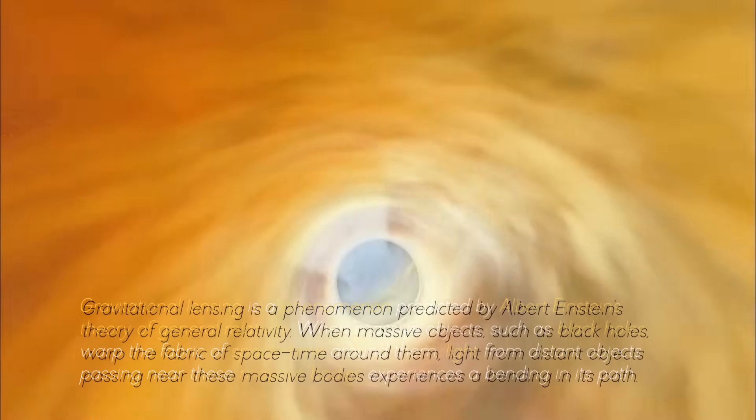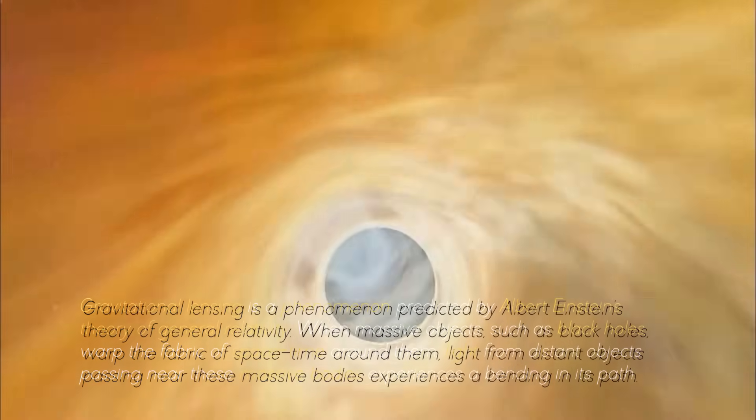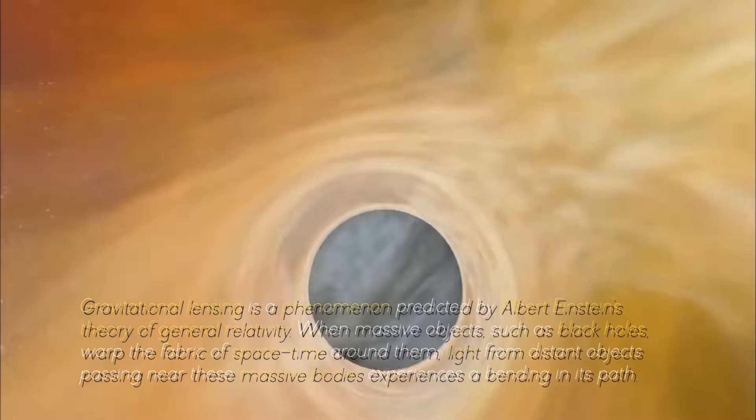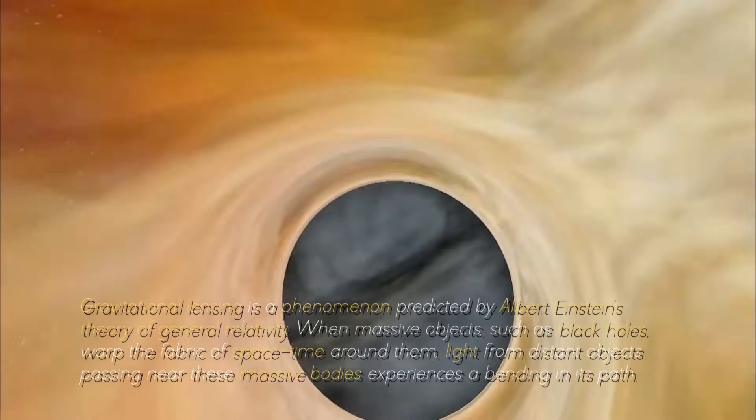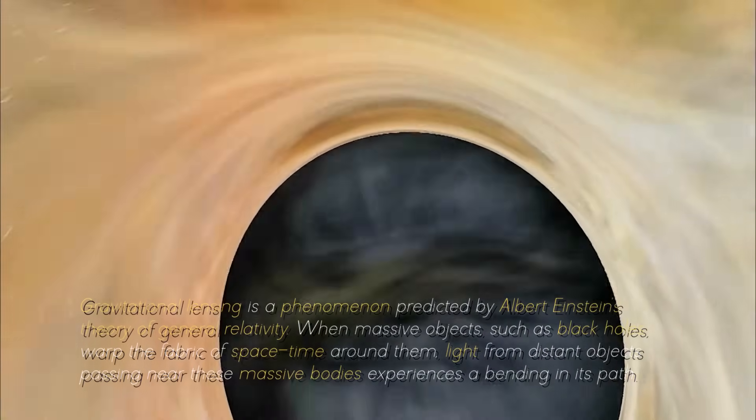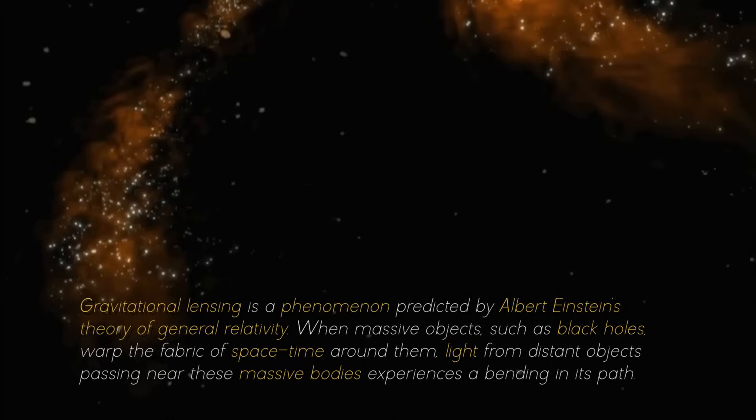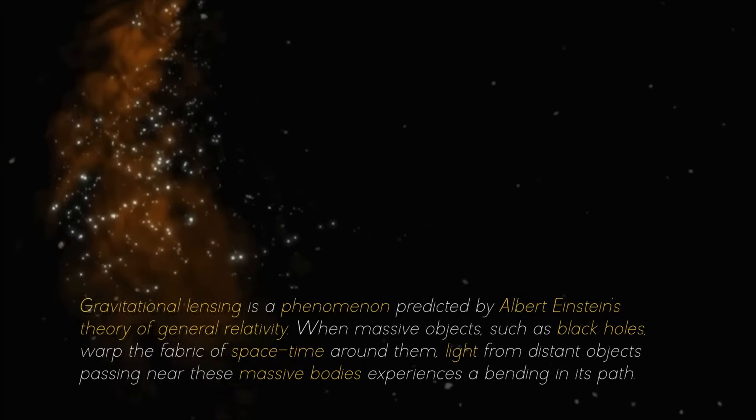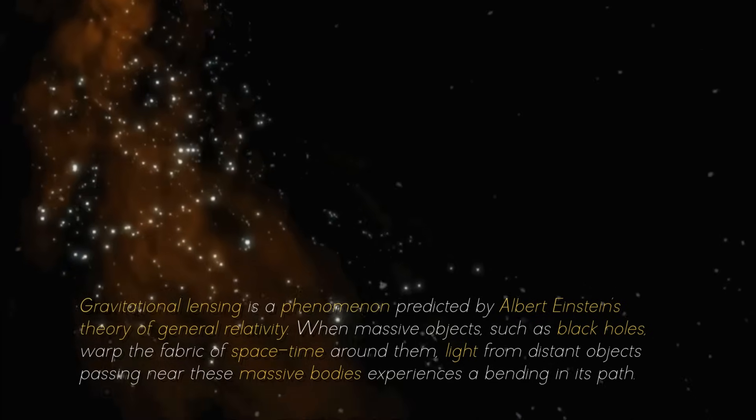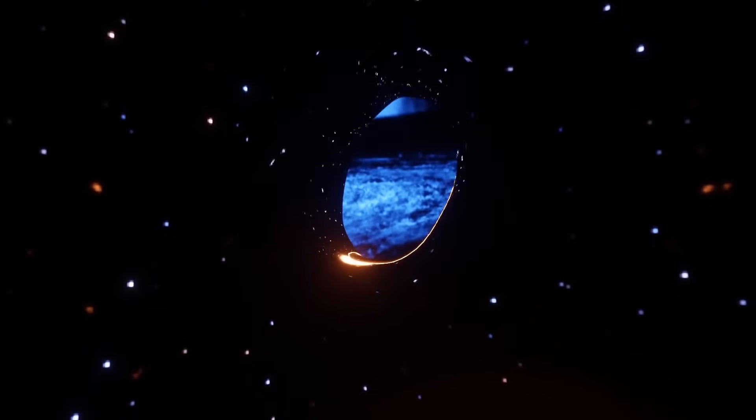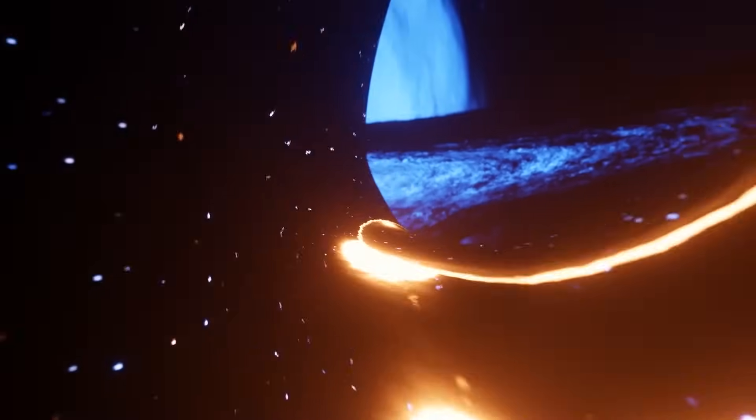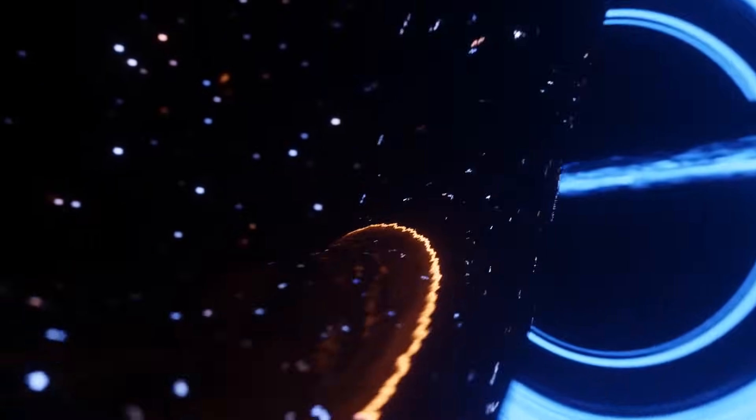Gravitational lensing is a phenomenon predicted by Albert Einstein's theory of general relativity. When massive objects, such as black holes, warp the fabric of space-time around them, light from distant objects passing near these massive bodies experiences a bending in its path. This results in a visual distortion or magnification of the object's image.